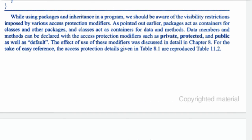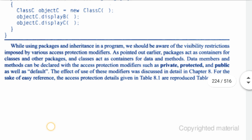While using packages and inheritance in a program, we should be aware of the visibility restrictions imposed by various access protection modifiers. Packages act as containers for classes and other packages, and classes act as containers for data and methods. Data members and methods can be declared with access protection modifiers such as private, protected, public, as well as default. The effect of these modifiers was discussed in detail in chapter 8. For easy reference, the access protection details are given in Table 11.2.